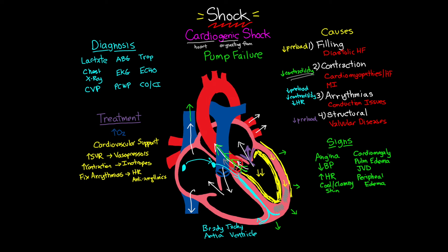Some vasopressors have a positive chronotropic effect. We might also look at antiarrhythmics such as amiodarone, lidocaine, and procainamide, as well as cardioversion in cases of ventricular tachycardia. For heart rate issues we also want to look at pacing options — internally, externally, or with a permanent pacemaker. Finally, we may need to look at some sort of temporary assist device that can rest the heart and handle moving blood throughout the body — things like an intra-aortic balloon pump, Impella, or potentially VA ECMO to completely take over for the heart.